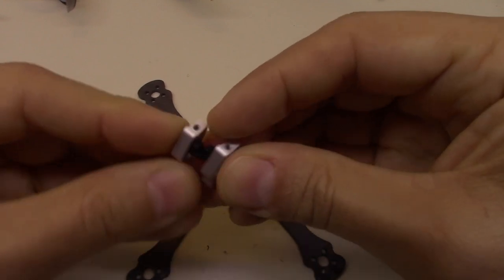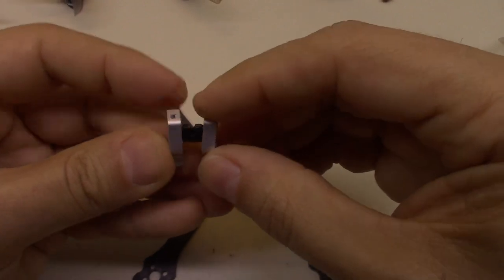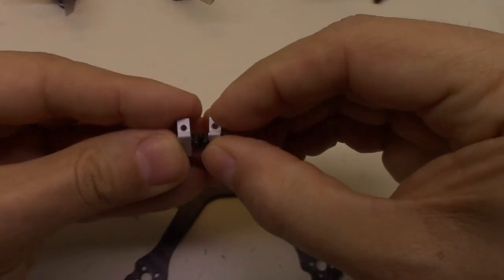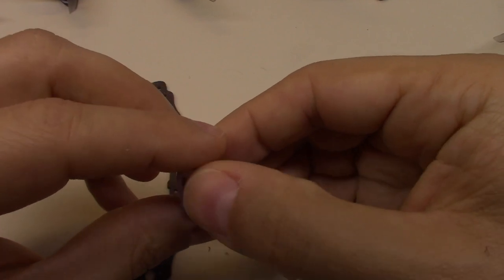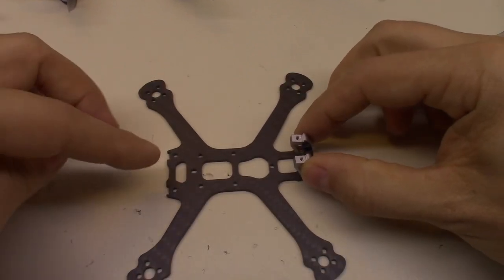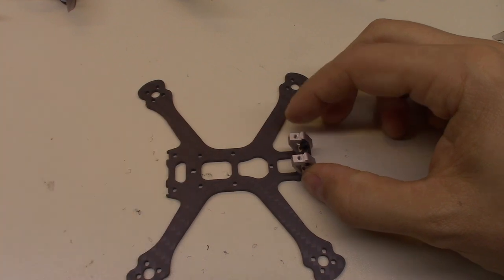All right, so first step according to directions is to smoosh this antenna mount into the rear uprights. So I've done that. And now it's telling us to just go ahead and mount this and the camera mount to the base plate. Let's get that done.